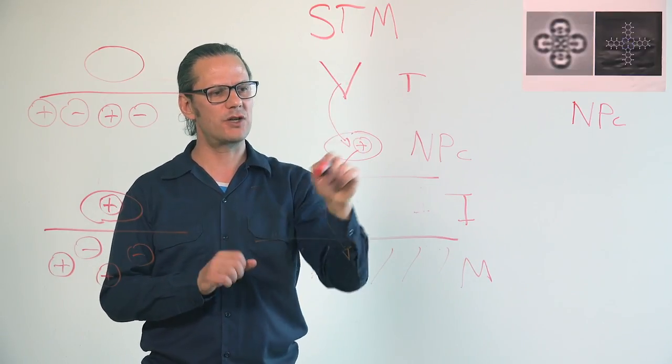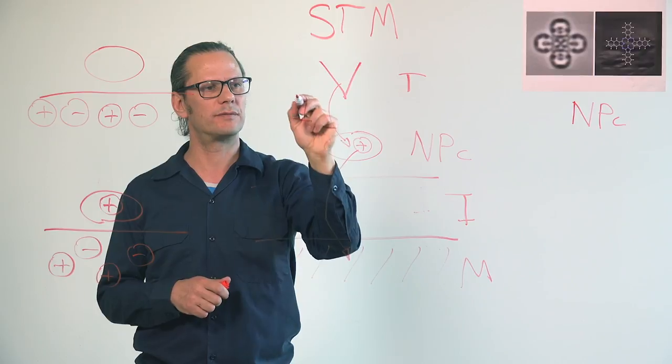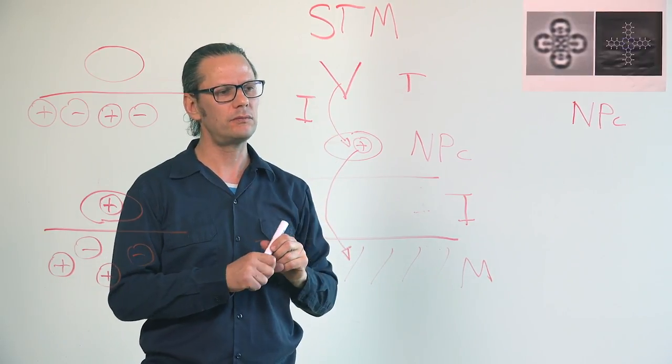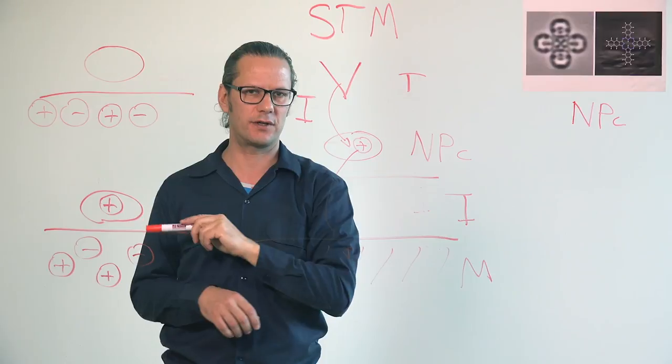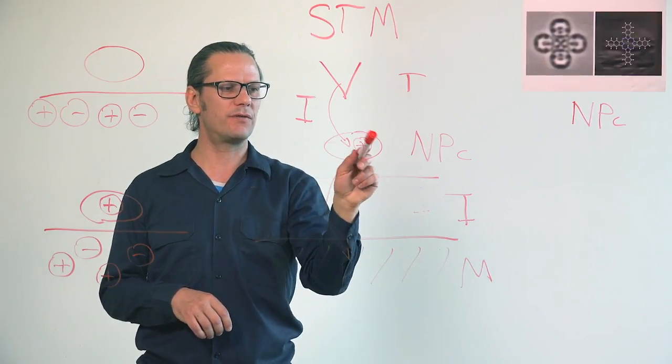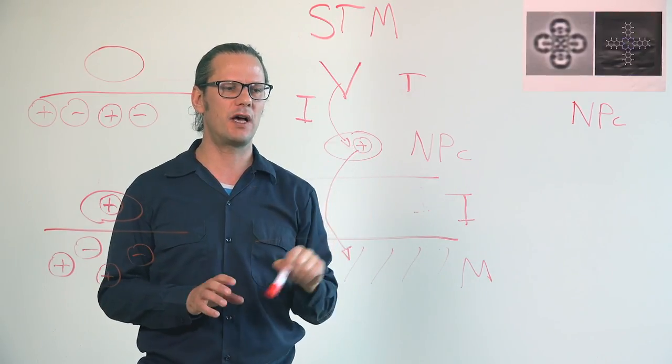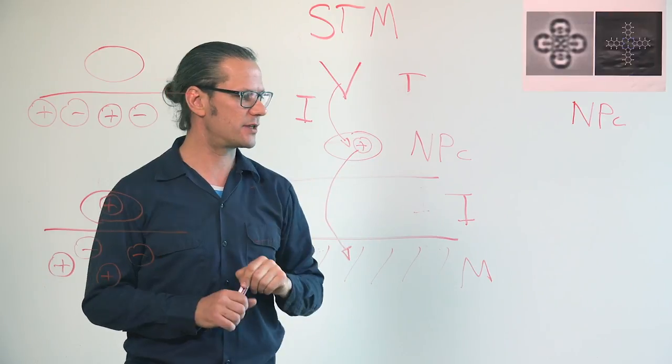You do this by measuring that current with your STM, the current I. The problem is, you cannot measure the backward transition. If that molecule is charged, it gets neutralized by tunneling to the metal substrate.